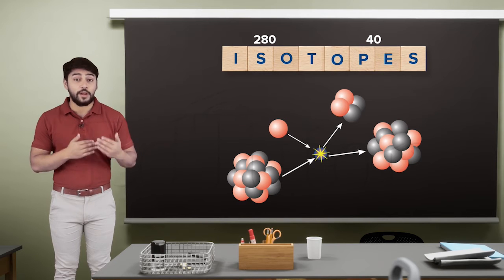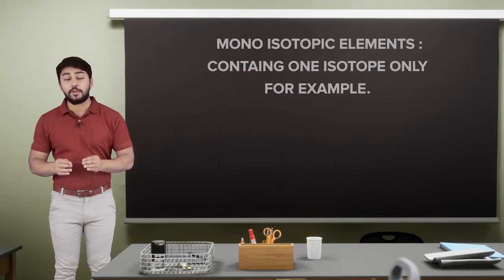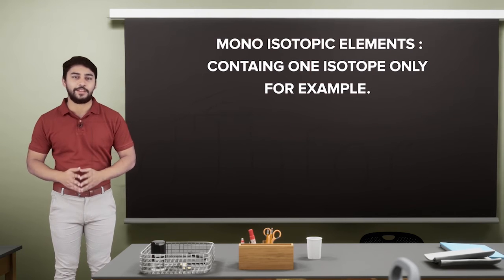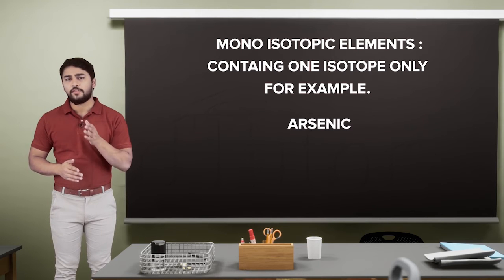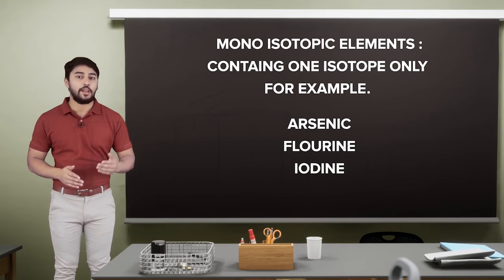If any element has only one isotope, they are termed monoisotopic elements. Such elements include arsenic, fluorine, iodine, and gold.